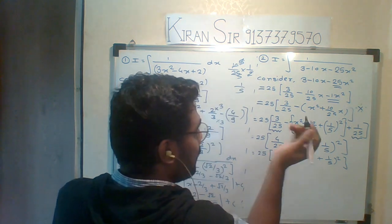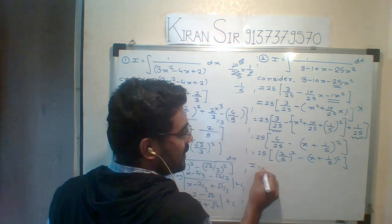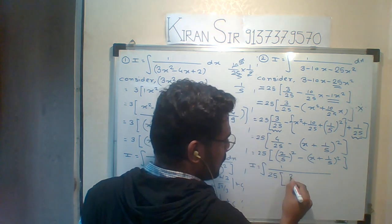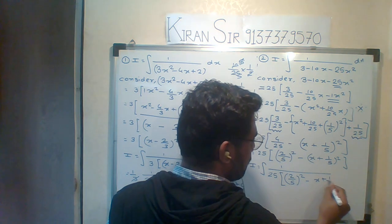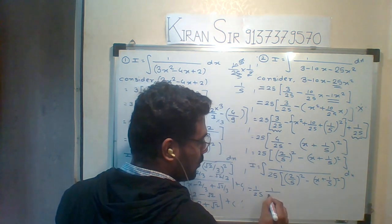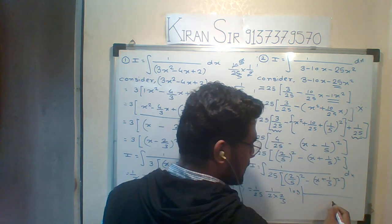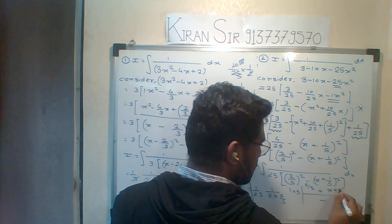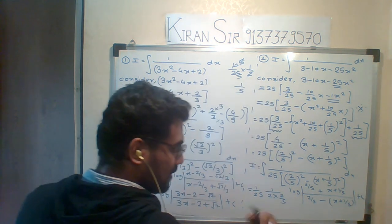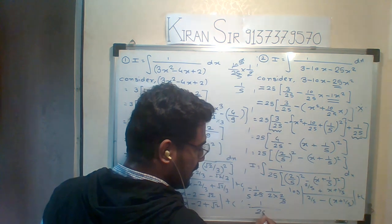And this particular simplification comes, so definitely I will substitute this particular thing in the denominator. So integration of 1 upon, the whole thing will enter into the denominator. What is that? The whole thing: 25 into (2 by 5)² minus (x + 1/5)². The function is negative, so what is the formula I'm going to apply? 1 upon 2a, a is 2 by 5, log of a minus, since it's a² minus, a plus x + 1/5, a minus x + 1/5. If I want to simplify, 5 into 5 is 25.